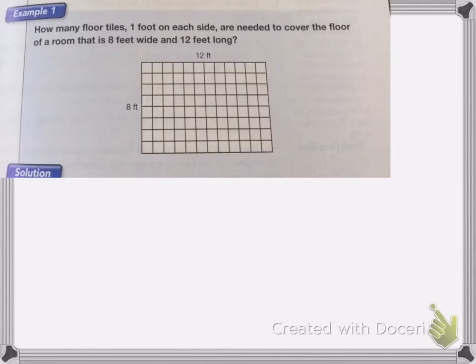So if we wanted to, we could take the time and count every single one of these tiles, but that would take about 20 years. So instead, we're going to multiply the length times the width. Length times width is how we find the area of a square or a rectangle.